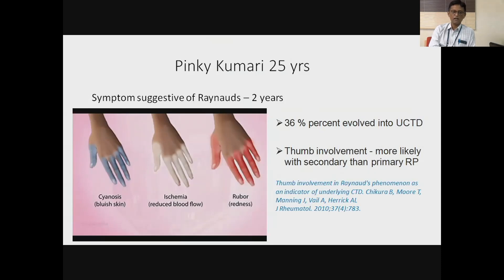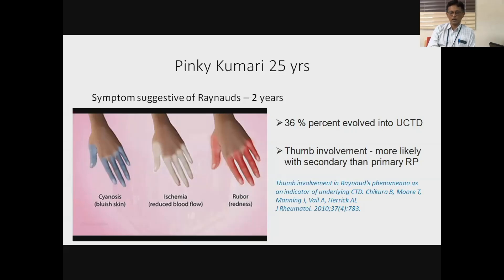History-wise, there is nothing else suggested. One thing we know is that if you take all Raynaud's together — primary and otherwise — one third of them evolved into a connective tissue disease or undifferentiated connective tissue disease. There is one study in Journal of Rheumatology 2010 which gives some clue: if you have thumb involvement in Raynaud's, the chances are that this patient has a secondary Raynaud's — secondary to a connective tissue disease — rather than primary Raynaud's.